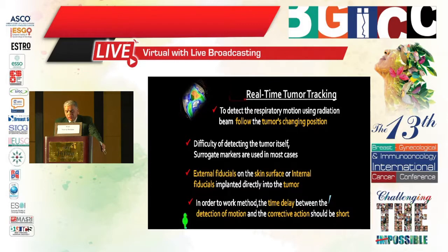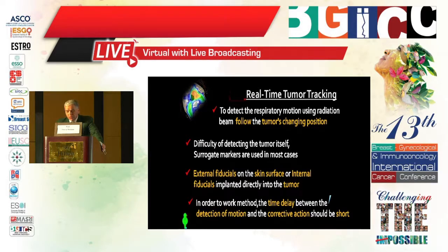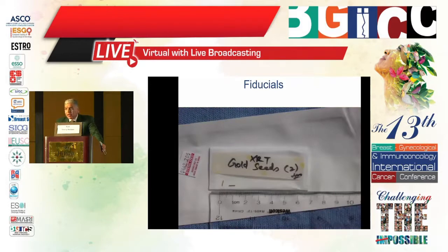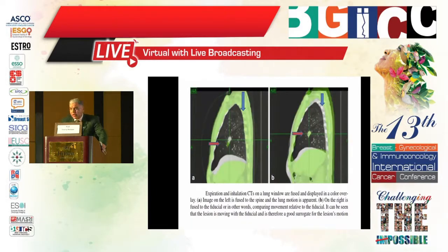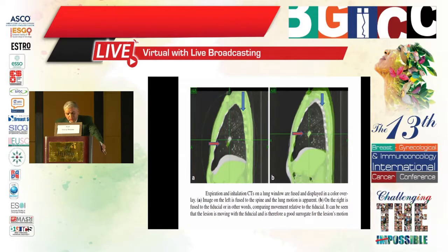Real-time tumor tracking is needed to detect respiratory motion and allow the radiation beam to follow the tumor's changing position. Detecting the tumor itself is difficult, so surrogate markers are used in most cases — external fiducials on the skin surface or internal fiducials implanted directly into the tumor. The time delay between detection of motion and corrective action should be short. Gold seed implantation can be used in the lung or prostate as internal fiducials.